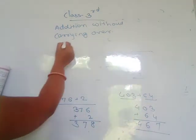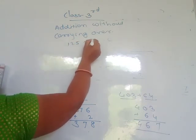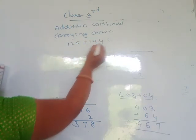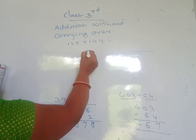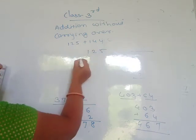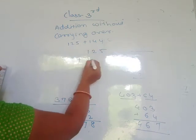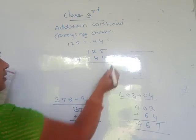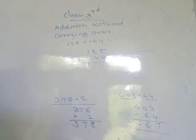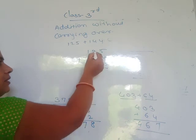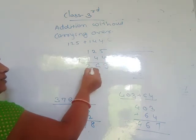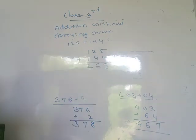Next: 125 plus 144 — both are 3-digit numbers. Write 125 plus 144. Units: 5 plus 4 equals 9. Tens: 2 plus 4 equals 6. Hundreds: 1 plus 1 equals 2. Answer: 269.